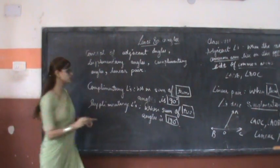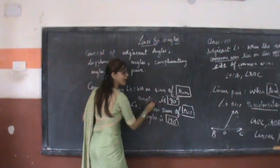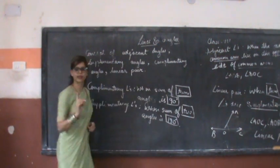Complementary angles are those angles when sum of two angles is 90 degrees. Make sure only two angles are there.